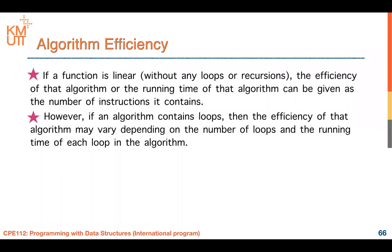If a function is linear — meaning we don't have any loops or recursions — the efficiency of that algorithm can be given as the number of instructions it contains, which is O(n). However, if an algorithm contains loops, then the efficiency may vary depending on the number of loops and the running time of each loop. If there is no loop, you can count it as one or a constant. But if you have a loop, you have to count the number of iterations — n, n squared, or something like that.